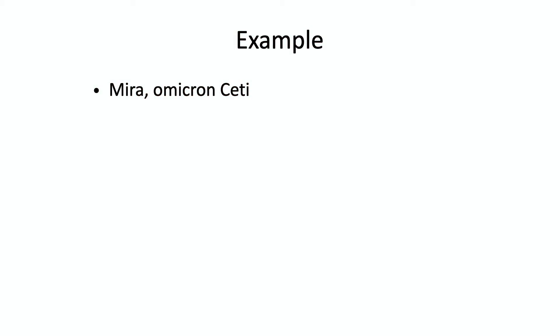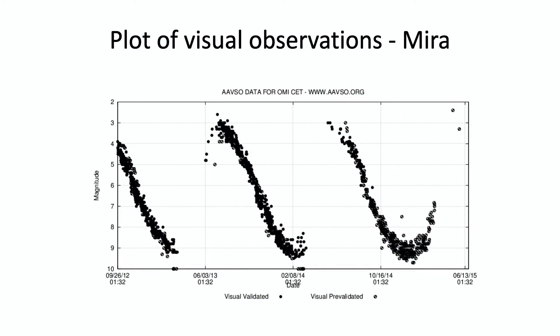I'll start with a few examples you may be familiar with. Probably you've all heard of Mira — one of the most famous variable stars, the prototype red supergiant variable. It varies from approximately magnitude 2 to 9 and is in the autumn sky. If you plot a light curve of Mira — this is a screenshot off the AAVSO website — you can type in the star you want, ask for a light curve, and it plots it. Here it's plotted about two and a half years.